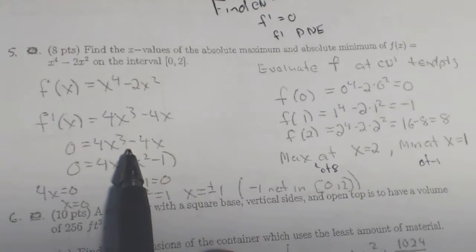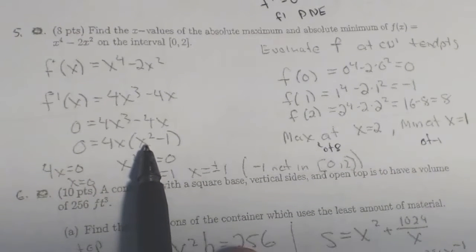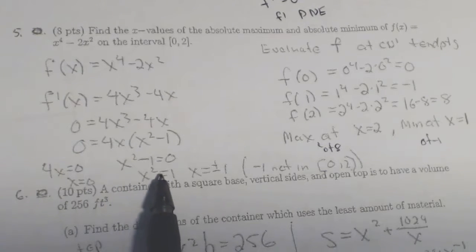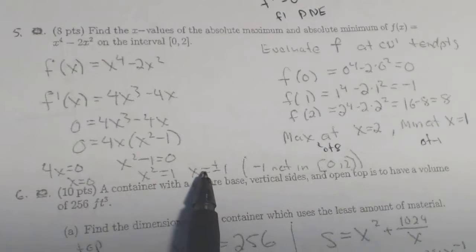Nice, easy one. Set it equal to 0, and solve it. When you solve this, x squared minus 1 equals 0. 4x minus 0 gives you x equals 0. x squared minus 1 equals 0 gives you x equal plus or minus 1.